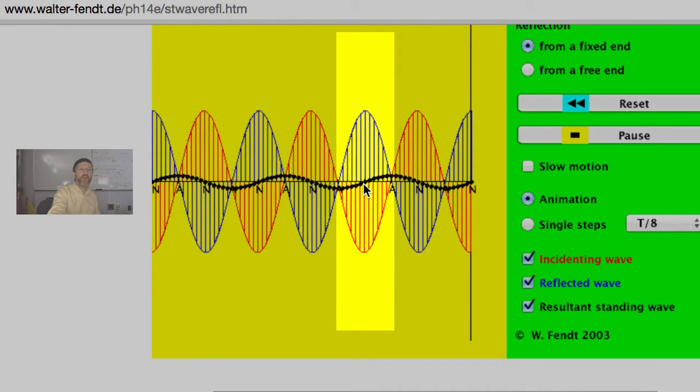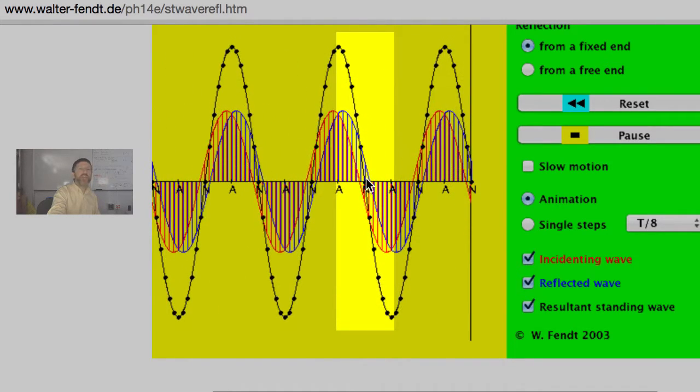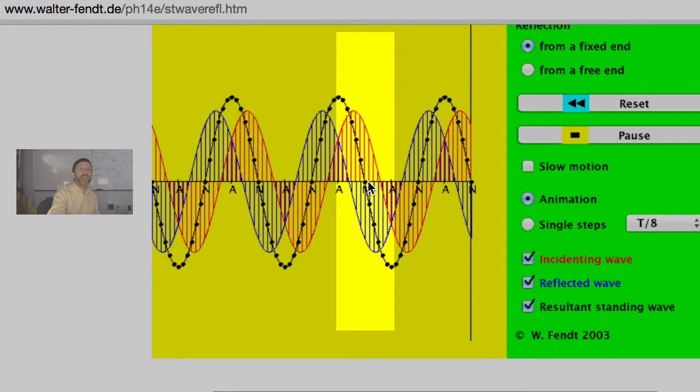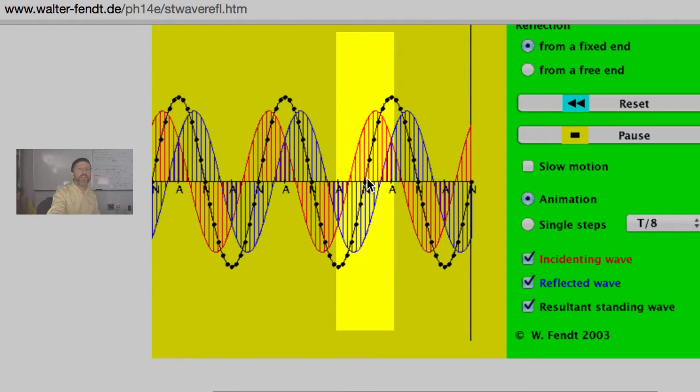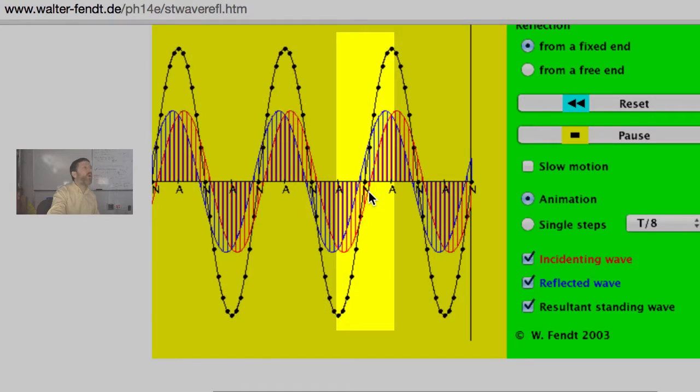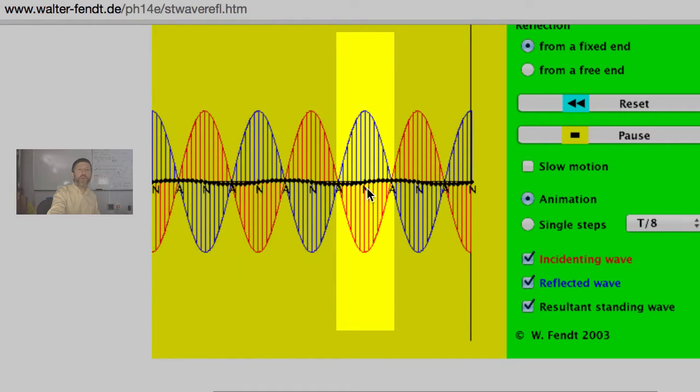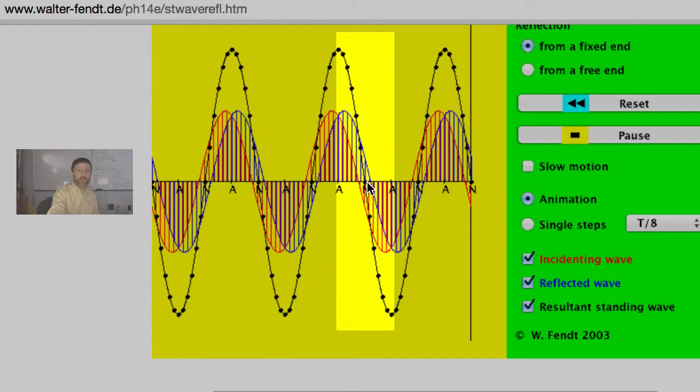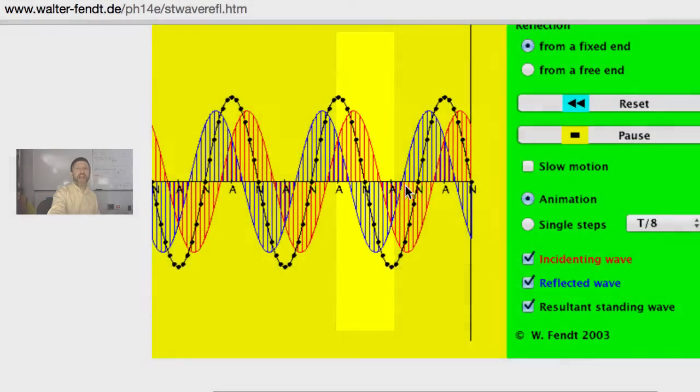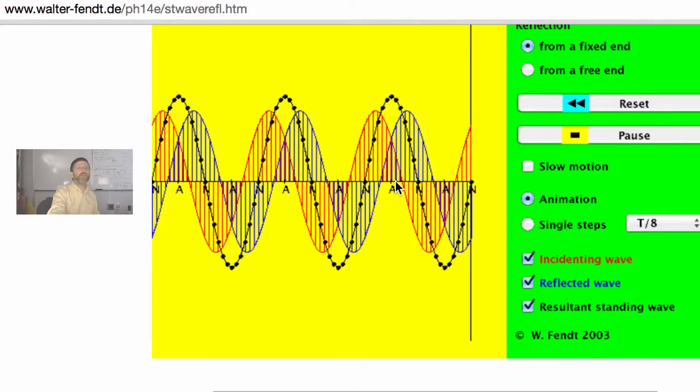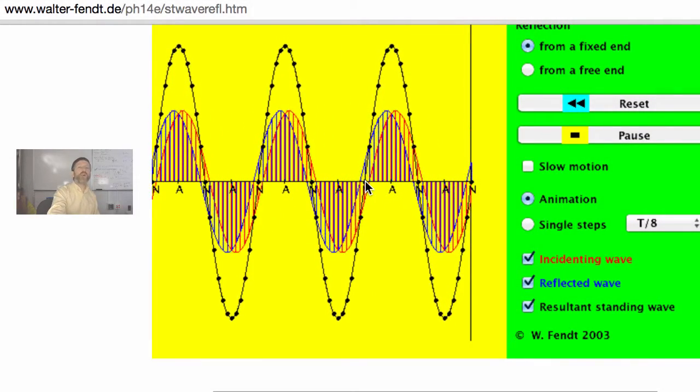Opposite. So it is always destructively interfering at this point. That is called N for node. Notice that destructive interference always happens at that point. Anti-node: constructive interference always happening. Node: destructive interference always happening.